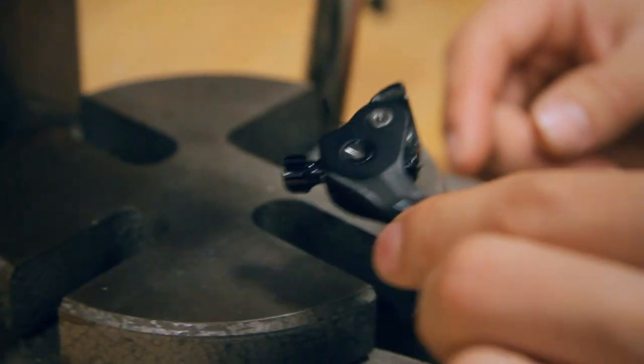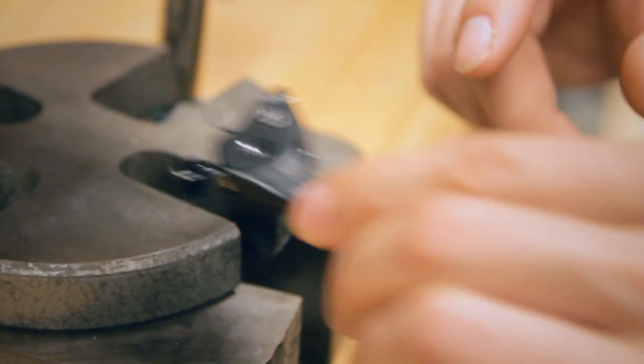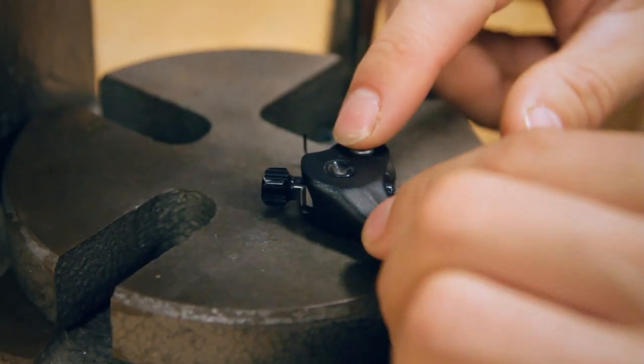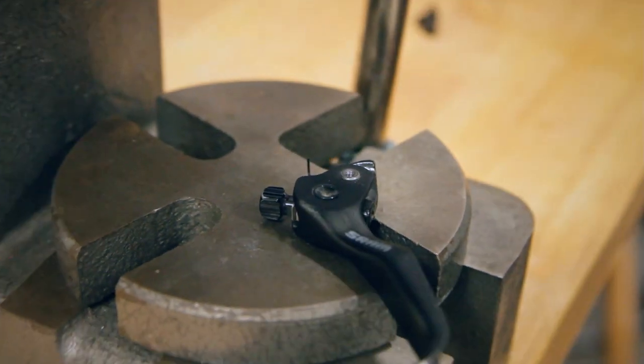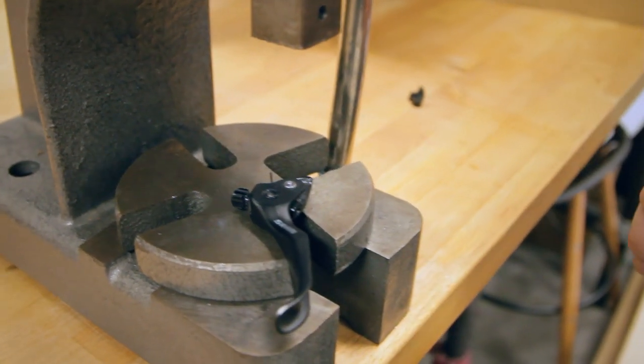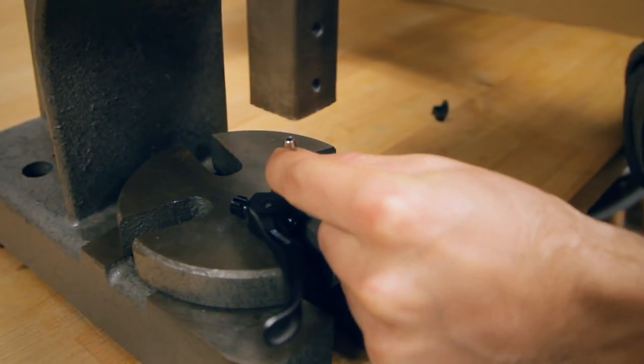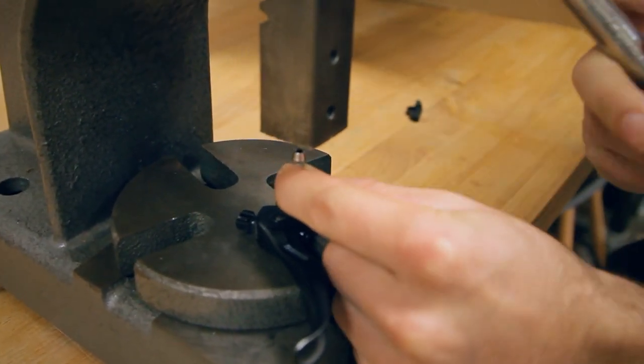The easiest way to do this is using an arbor press. This pin right here, that's what you're going to be pressing out. Drop that on there so it is well supported. Then you can use your pad screw to press out the pin.